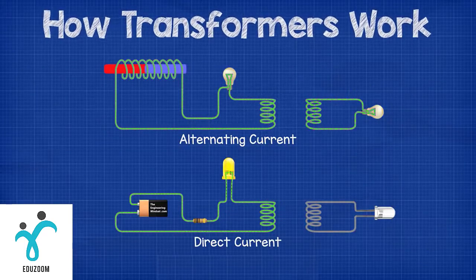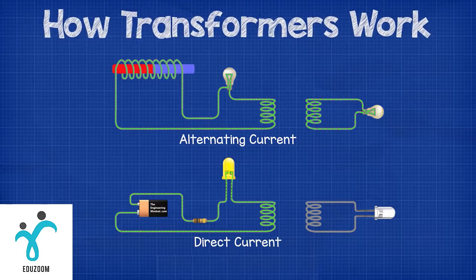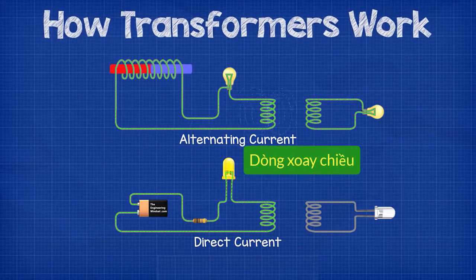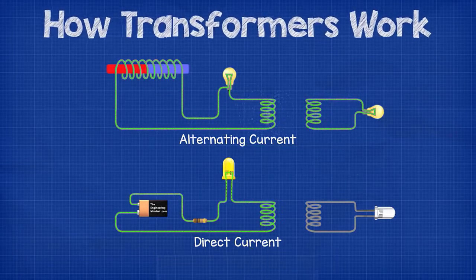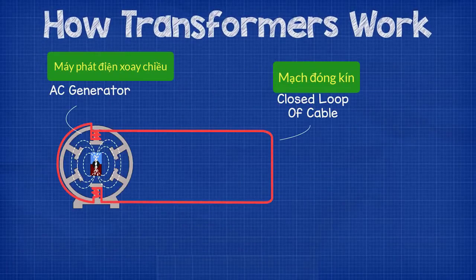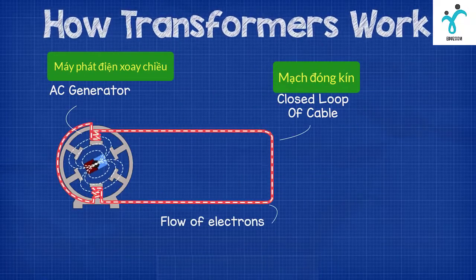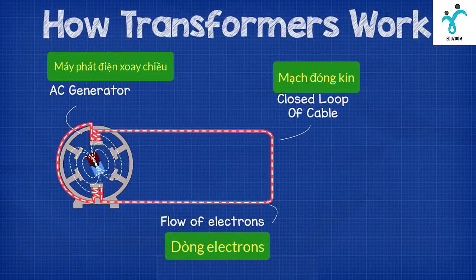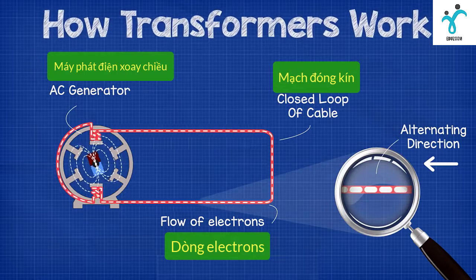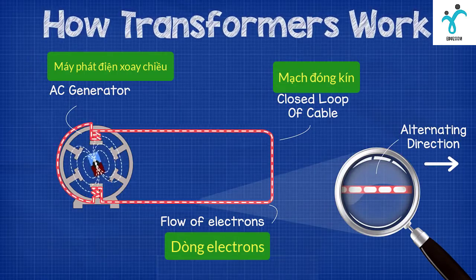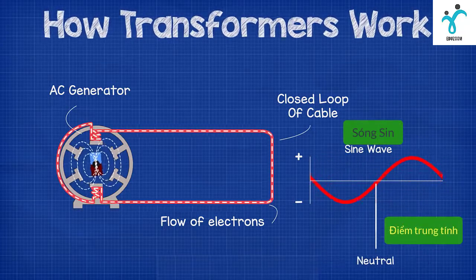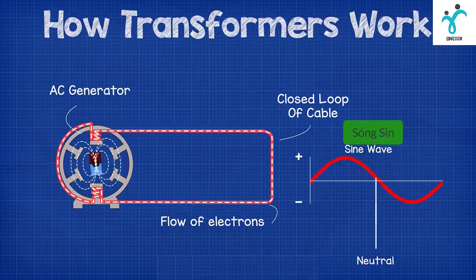Now there are two types of electricity, AC and DC, but transformers can only work using AC or alternating current. If you don't know the difference, you can find links to these videos in the description below. When we connect an AC generator to a closed loop of cable, a current will flow and its direction will alternate backwards and forwards with the rotation of the generator. The alternation means that the current reaches its maximum and minimum point during the cycle, which gives it its sine wave pattern when connected to an oscilloscope.